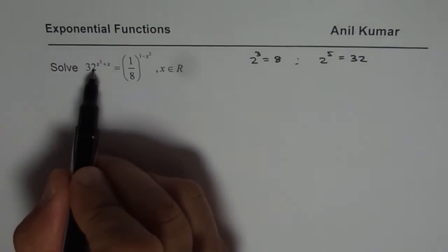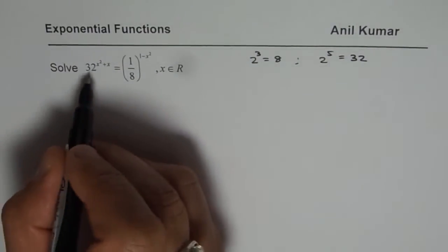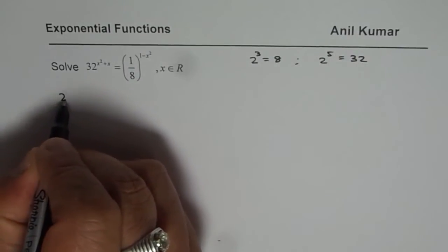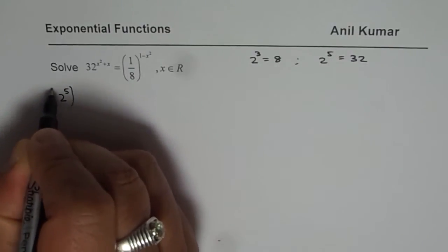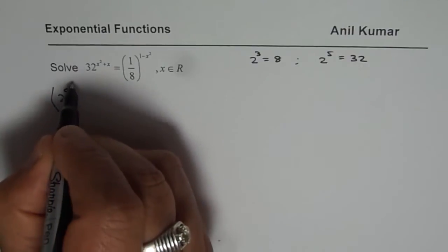So let's begin by writing 32 as 2 to the power of 5. So on the left side I get 2 to the power of 5 and already I have there x square plus x.